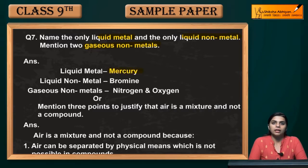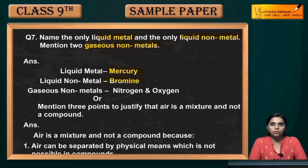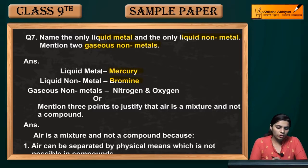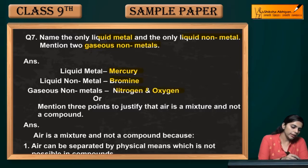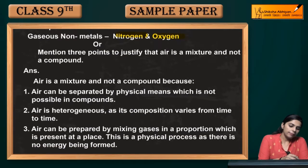The liquid metal is mercury. The liquid non-metal is bromine, which does not lose electrons but gains them. The gaseous non-metals, which are in the gaseous state, are nitrogen and oxygen.